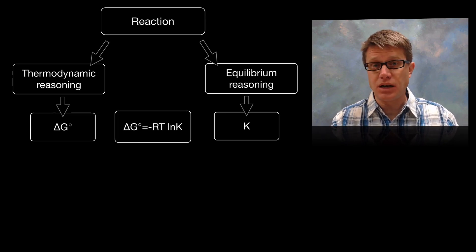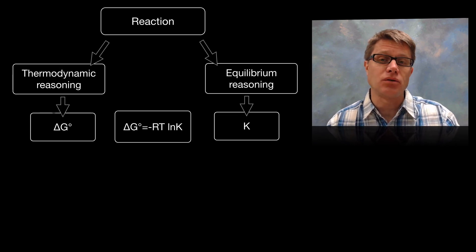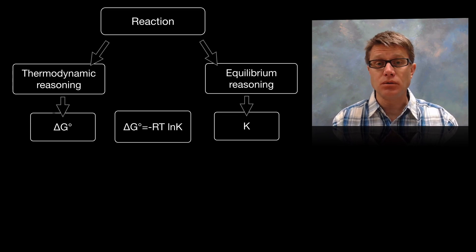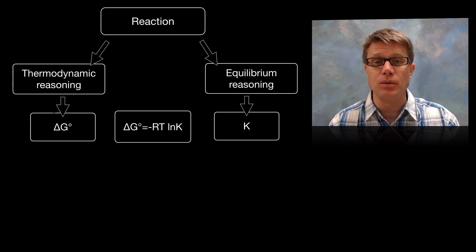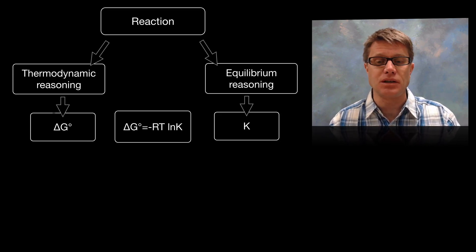Where delta G equals the negative RT, so that's going to be the gas constant times the absolute temperature times the natural log of K. And so we can interact between the two. And if we figure out our delta G, which I mean you could use the appendix in the back of most chemistry books to figure it out, that tells us a lot about what's going to happen to K.